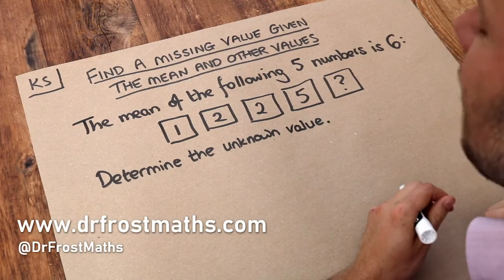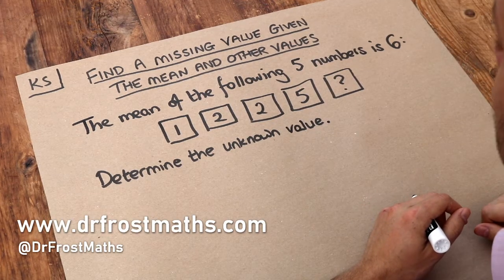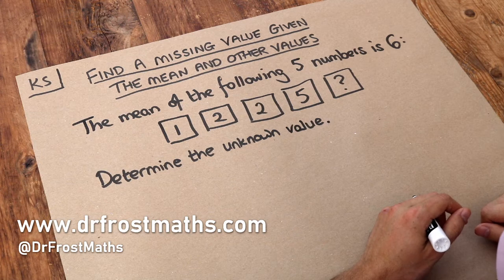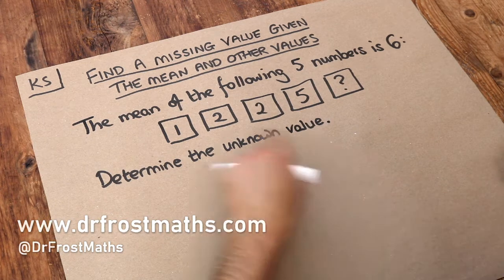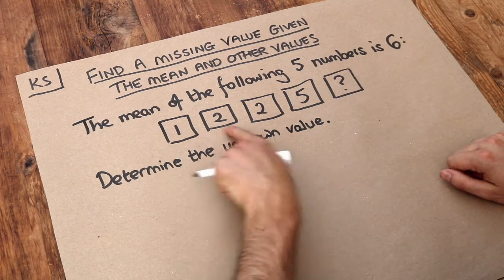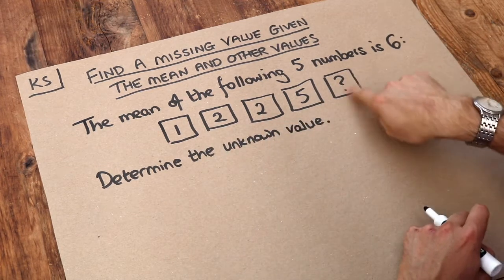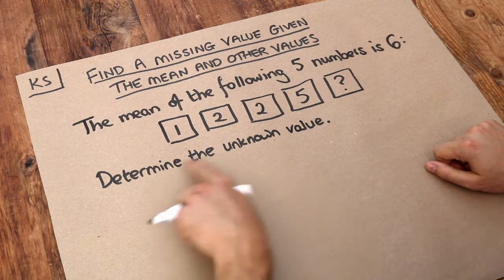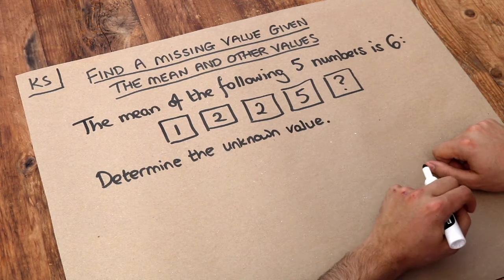Hello and welcome to this Dr. Frost Maths key skill video on finding a missing value given the mean and other values. We have this question here: the mean of the following five numbers is 6, and here are our five numbers, and we don't know this number here. So the question is, determine the unknown value.